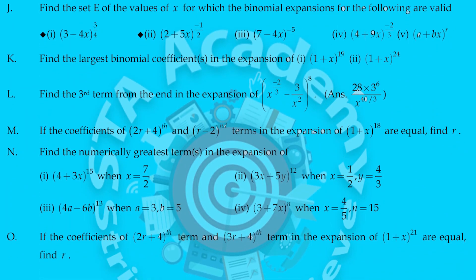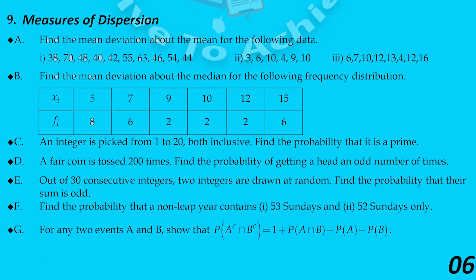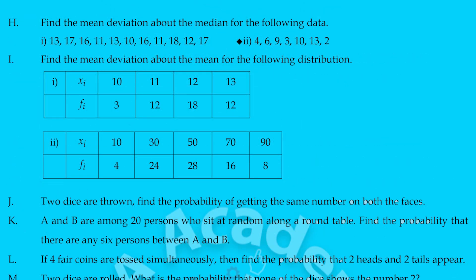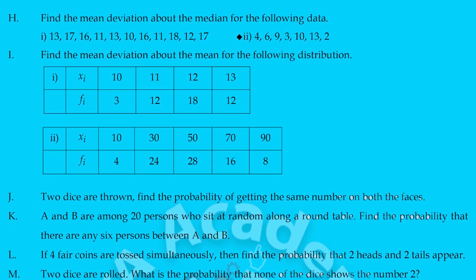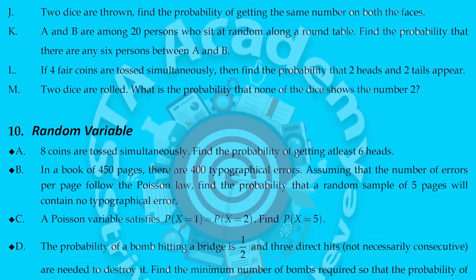Next is question number 9, measurement of dispersion — a very important chapter that you already covered in 9th or 10th standard. We know how to calculate mean, median, and mode. This chapter gives you 2 plus 7 marks: one LAQ and one VSAQ. A new topic here is mean deviation. The first question: find the mean deviation about mean for integers 1 to 20. If a fair coin is tossed 200 times, find the probability of getting an odd number of heads. Two dice are thrown — find the probability of getting the same number on both faces.